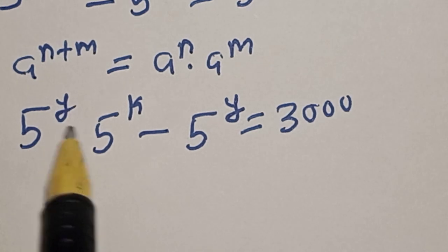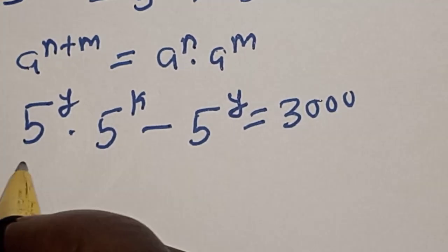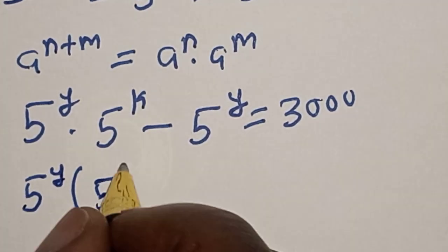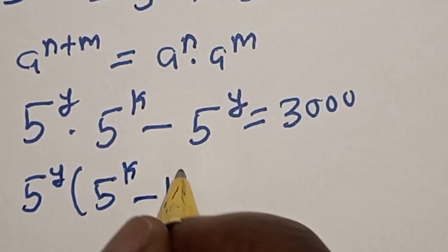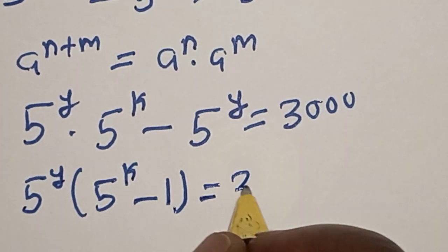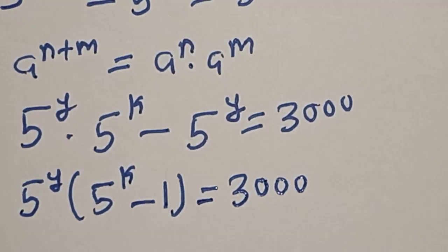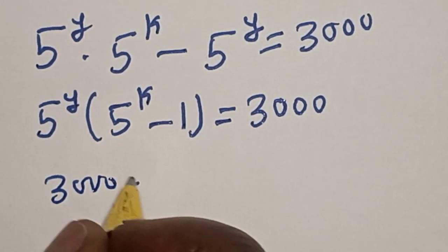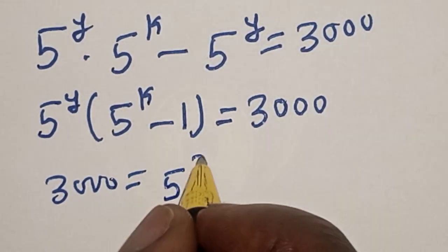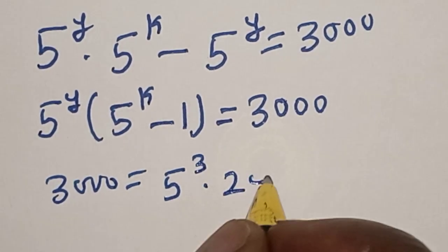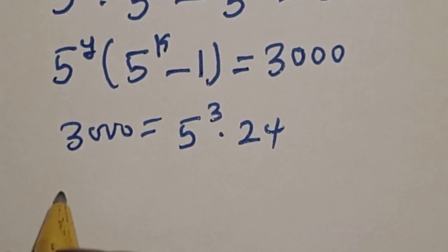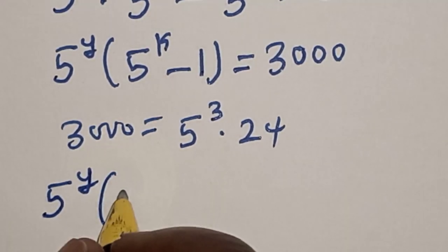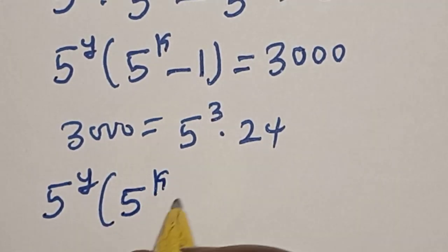Now we have 5 raised to power y appearing in both terms, so we factor it out: 5 raised to power y, multiplied by (5 raised to power k minus 1), equals 3000. Now 3000 equals 5 raised to power 3 multiplied by 24. So we have 5 raised to power y times (5 raised to power k minus 1) on the left side.